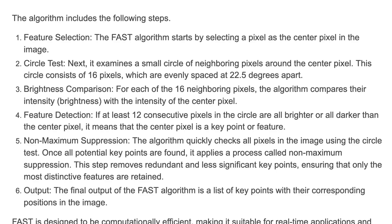Next is the brightness comparison. For each of the 16 neighboring pixels, the algorithm compares their intensity with the intensity of the center pixel. For feature detection, if at least 12 consecutive pixels in the circle are all brighter or all darker than the center pixel, it means the center pixel is a key point or feature.